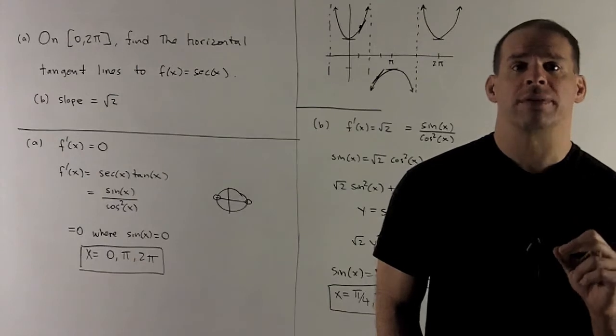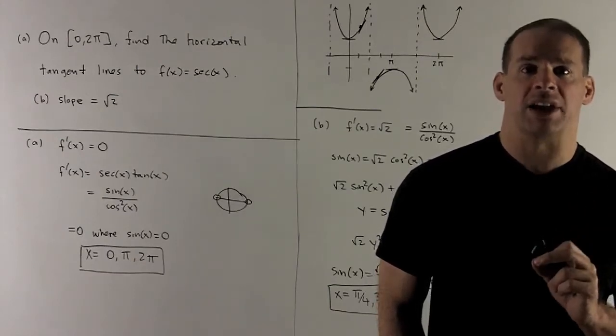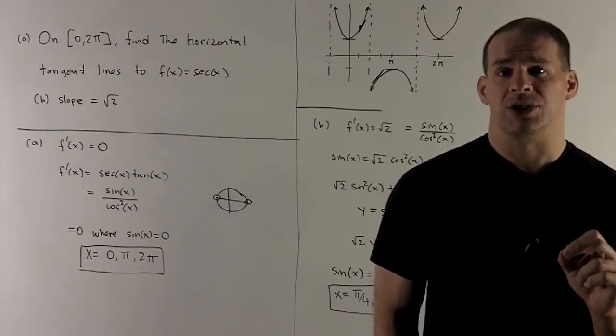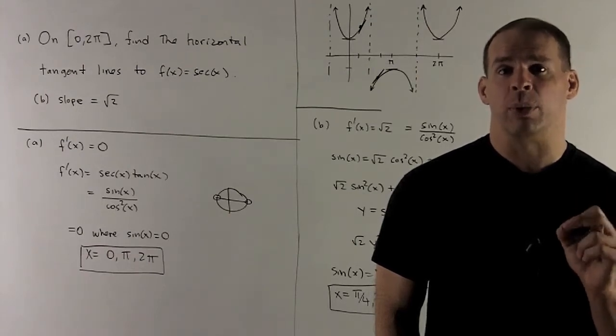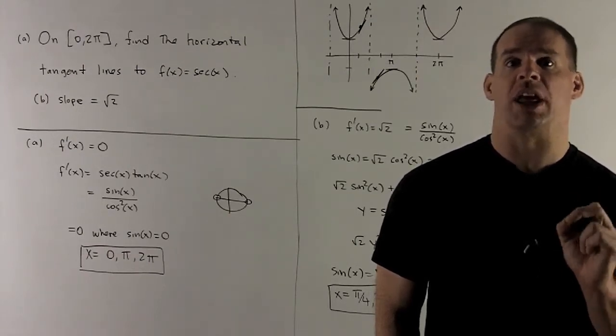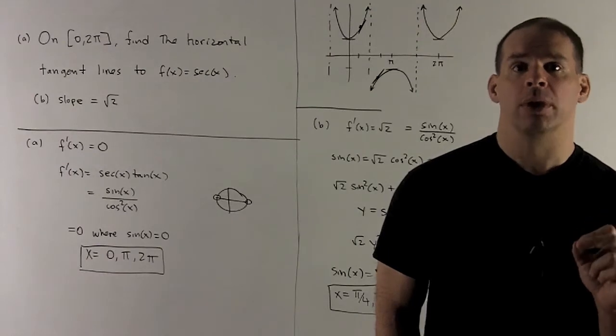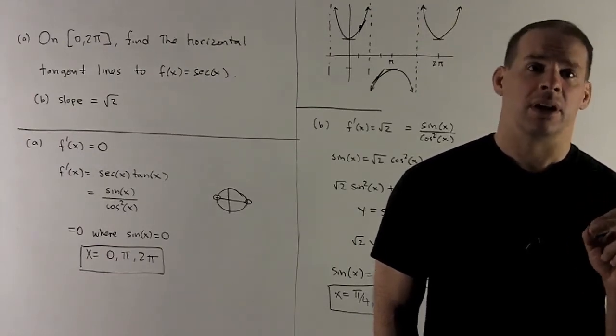To start off, let's recall the fact about the tangent line: the slope is going to be given by the derivative evaluated at the point where you're taking your tangent line at.